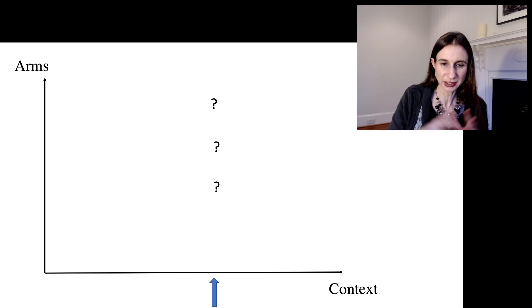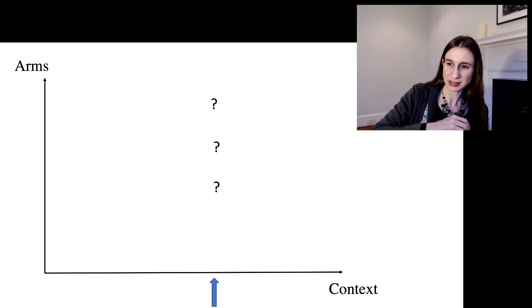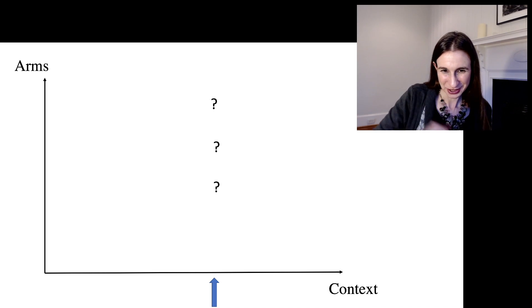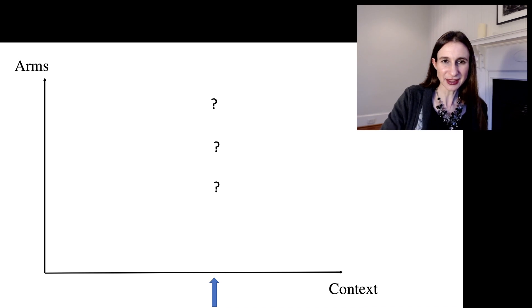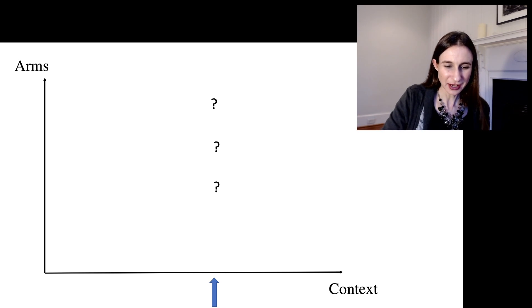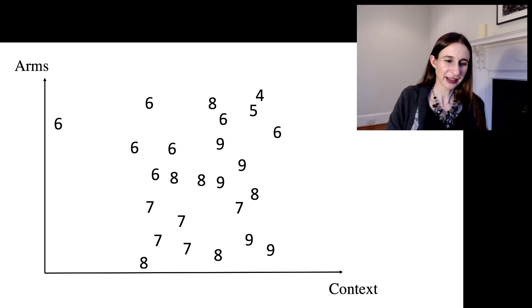So let's say that we have a continuous arm space here that we're choosing, say, a continuous set of prices to show to the user to see whether the user will click on the thing. So now let's say that I have just explored for a while. Every time I've seen a new context, I chose a random arm, and I got a collection of rewards that I'm showing you here. So what do I do with that?